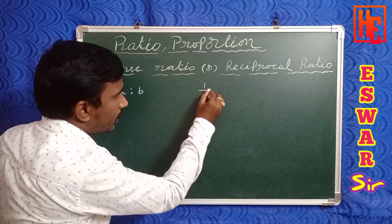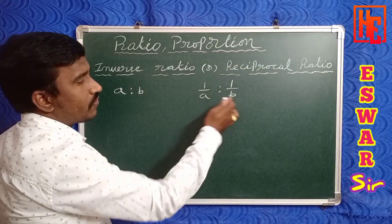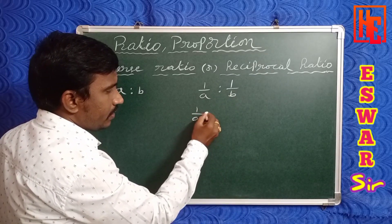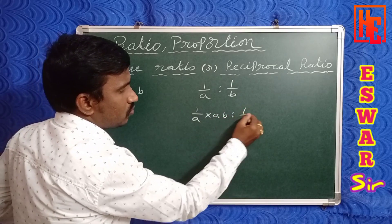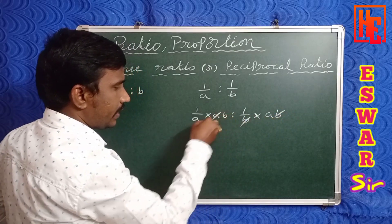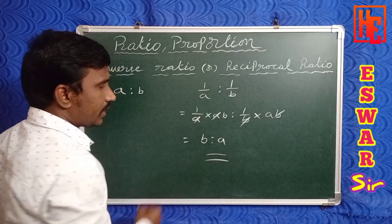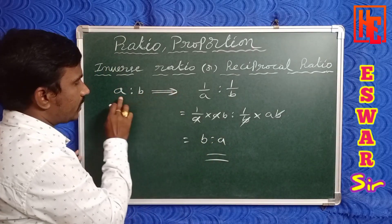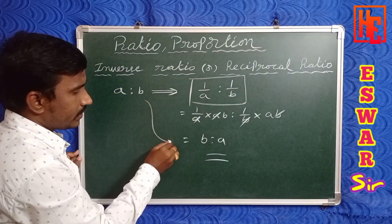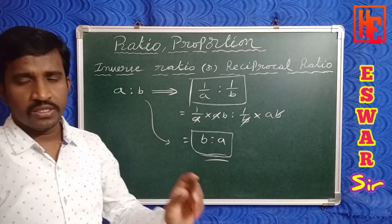Otherwise, take the LCM of a and b. The LCM of a and b will be ab. So 1/a multiplied by ab is to 1/b multiplied by ab — b cancels and a cancels — giving b is to a. So the inverse ratio of a is to b is either 1/a is to 1/b, or b is to a.